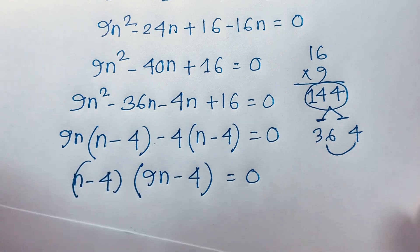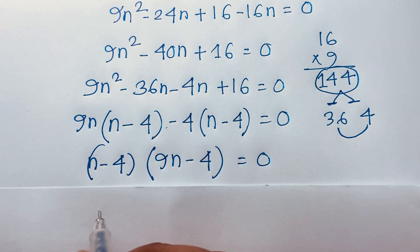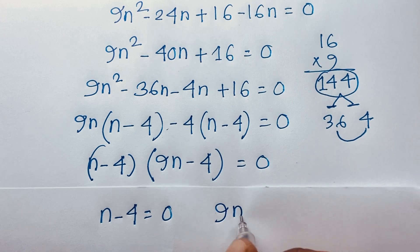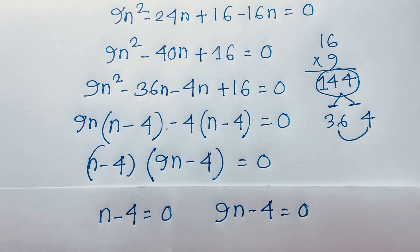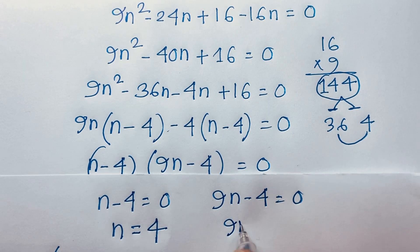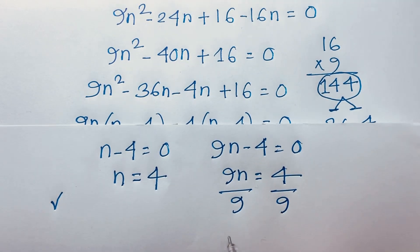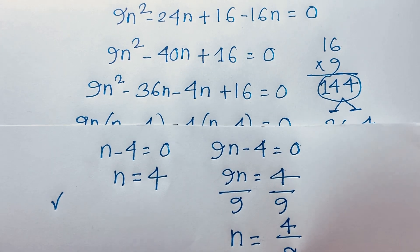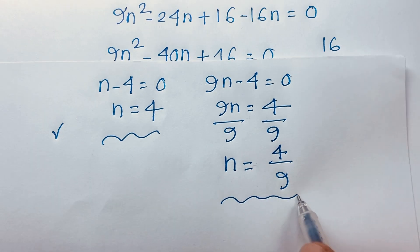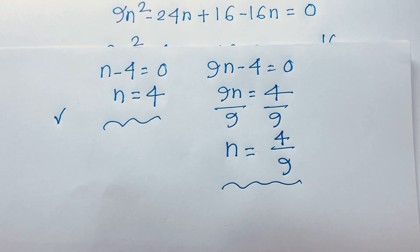Case 1: n - 4 = 0, so n = 4. Case 2: 9n - 4 = 0, so 9n = 4, meaning n = 4/9. Our two candidate answers are n = 4 and n = 4/9. Now let's verify which is the correct answer.